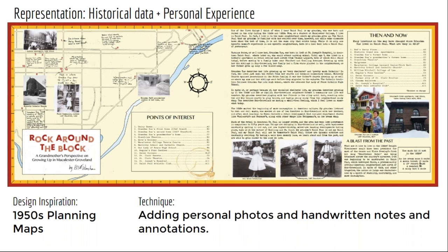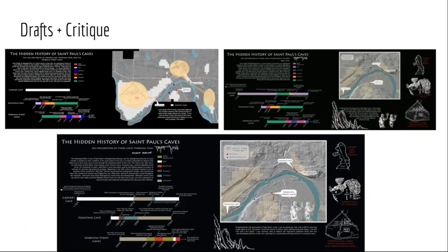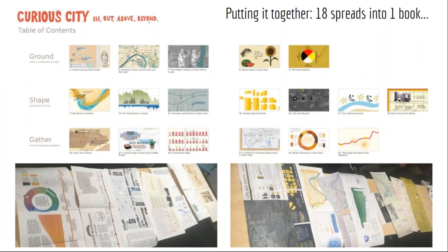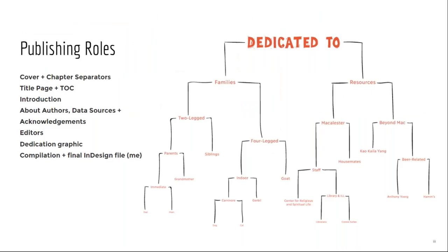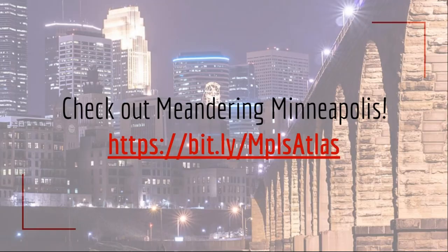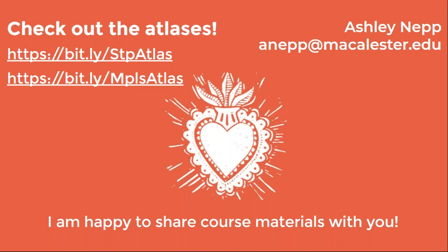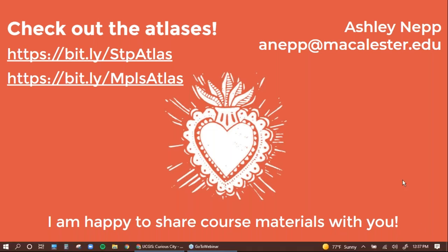We went through many draft iterations and critiques — two formal critiques and then many informal ones. We also had to put it together into chapters. Each student took on some publishing roles: editing, creating a title page, writing the introduction, and so on. We did a Minneapolis one the following year. If you have questions or want to talk about any of that more in depth, I'm happy to do so, but I want to have time for discussion.